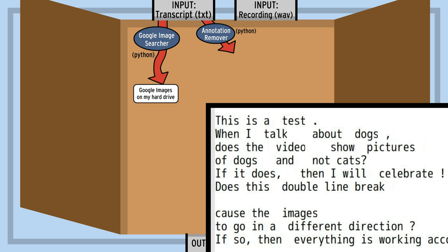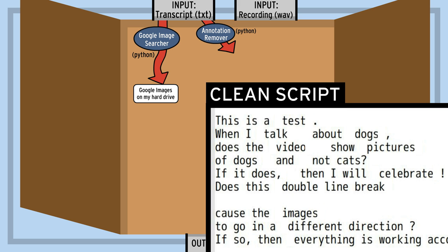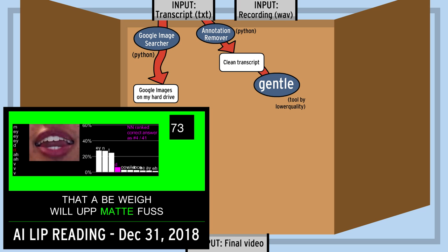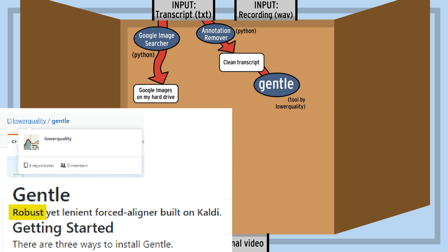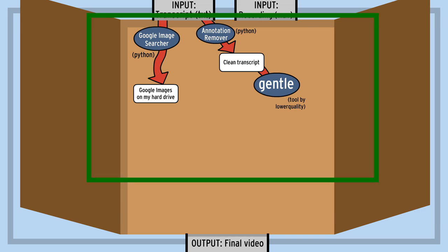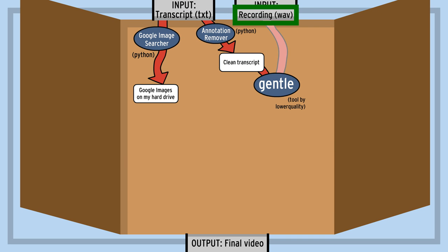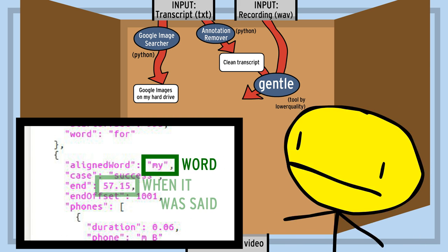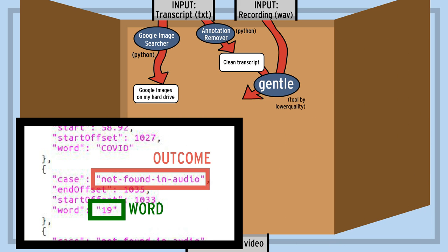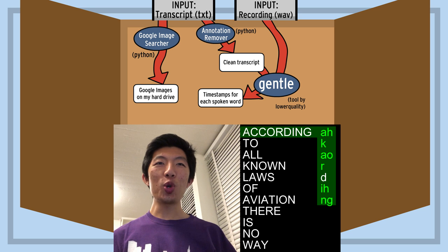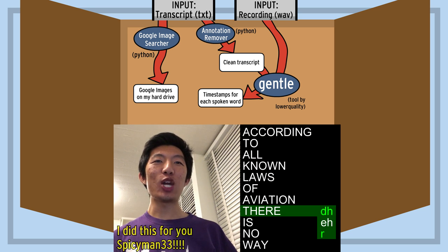Then we have the second component, which removes all the annoying annotations to produce a clean script, which we then feed into our third component, Gentle. If you remember from my lip-reading AI demonstration, Gentle is a robust yet lenient forced aligner built on Kaldi by lower quality. What that means is, if we give it both the cleaned script and my audio file, it can tell me the timestamps for when I said every word of the transcript. Because my voice is really weird, it sometimes messes up, but it's not often enough to cause problems, and it's actually robust enough to work on over an hour of me saying the B-movie script, so I'm sure it's fine.